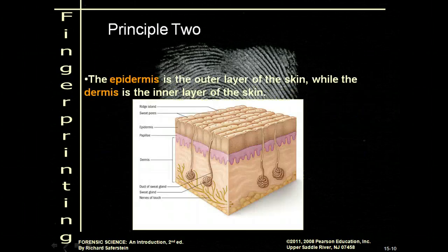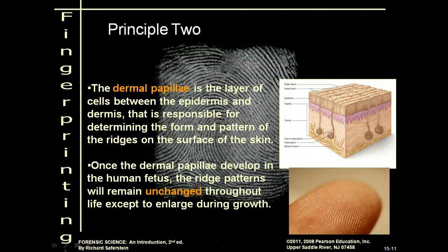When talking about how fingerprints stay the same throughout our entire life, you need to know a little about skin layers. The epidermis is the outer layer of the skin, while the dermis is the inner layer. What we're actually looking for is the dermis papillae — a layer of cells between the epidermis and dermis — which pushes out on our skin and causes our fingerprints to stick out a little bit. Once those develop, that same pattern stays.